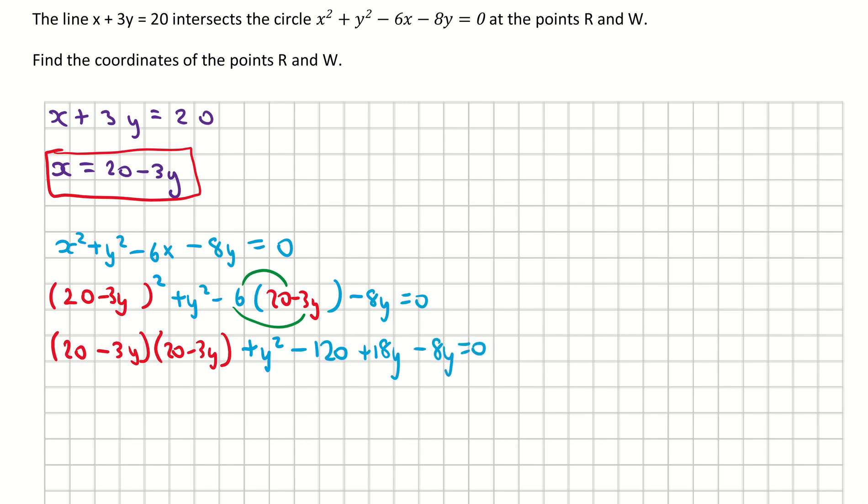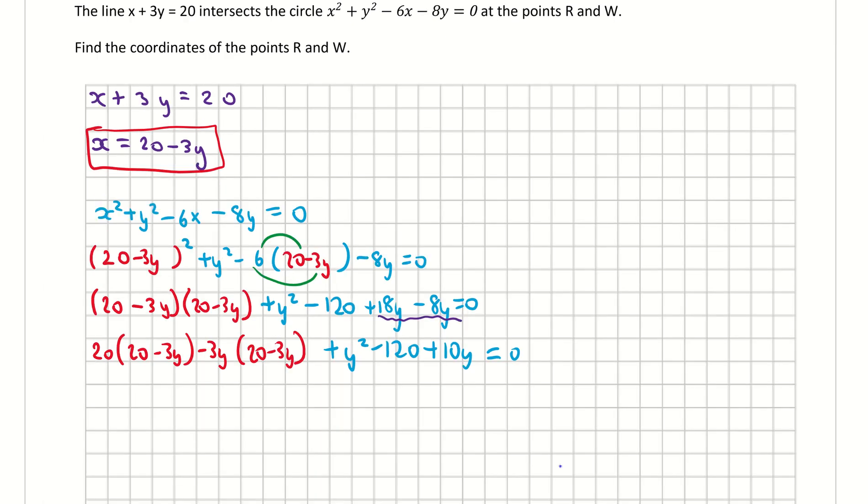Now opening up my brackets: 20 times (20 - 3y), and then the second term multiplied by that second bracket. I can start tidying up the right-hand side here as well. I have 18y and minus 8y, which will give me plus 10y. So I have plus y² minus 120 plus 10y = 0.